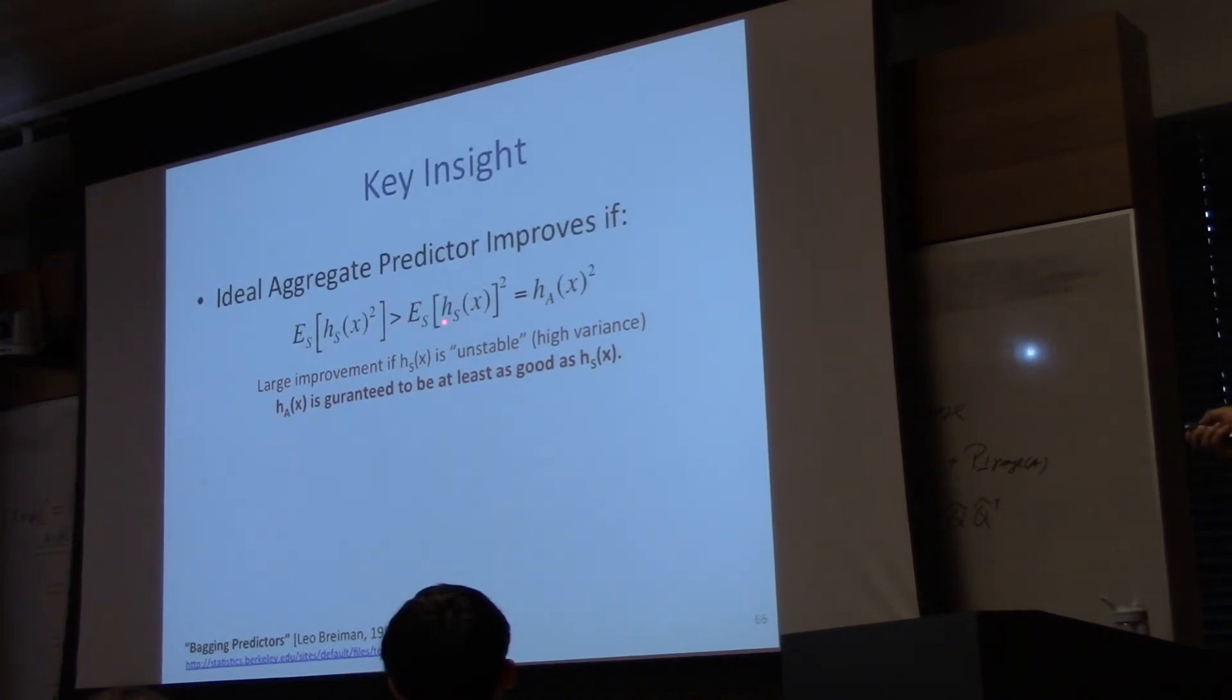And this should be less than or equal, or sorry, the key is this inequality. And here it's a less than or equal to, and the ideal aggregate predictor has a huge improvement over the average model class loss if this difference is huge. And this is just the variance, this is big if the model class is unstable as well. There's no way to actually measure this for different prediction problems, it has a different value, but intuitively, when this difference is large, we get a big improvement from using an ideal aggregate predictor.